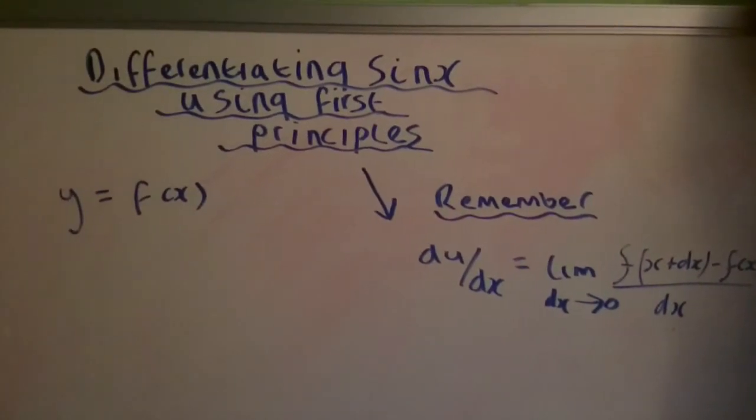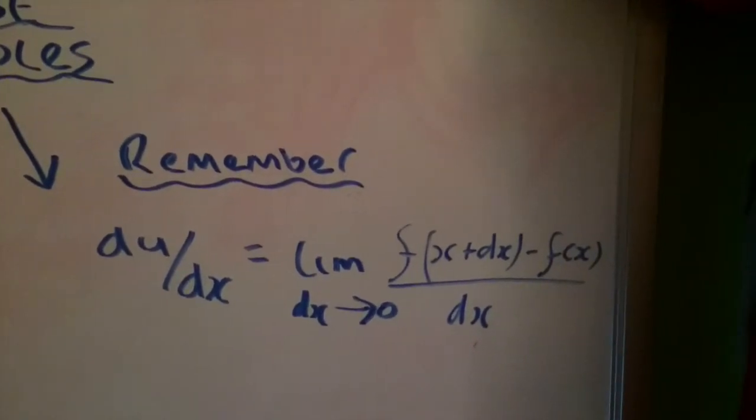As you can see, if we let y equals f of x, and remembering if the function of x is equal to sine x, the differential, which is over here, the dy by dx is equal to the limit with the change in x tending to zero, with the function of f of x plus the change in x minus the function of x over the change in x is equal to the differential.